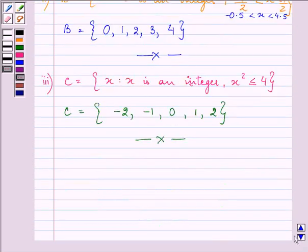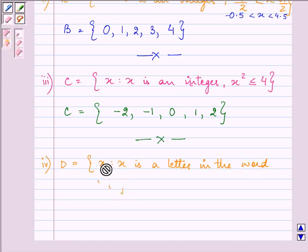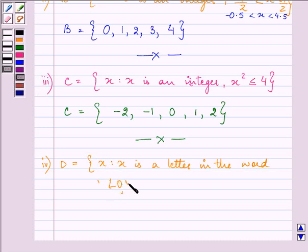Proceeding on to the fourth part, we have D is equal to x such that x is a letter in the word LOYAL. So our answer will be as we know in roster form we do not repeat the letters. So we will have L, O, Y, A and since L is already written we will end it here. So this becomes the answer of the fourth part.